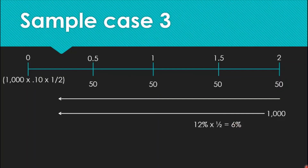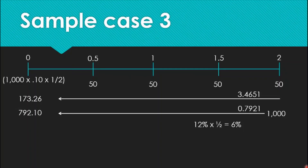The PV lump sum for 6% is 0.7921, and the PV annuity is 3.4651. The coupon payments of 50 times 3.4651 give us 173.26. The par value of 1,000 multiplied by the PV lump sum of 0.7921 gives us 792.10. So the total value is 173.26 plus 792.10, which equals 965.36 pesos. This is the value of the bond.